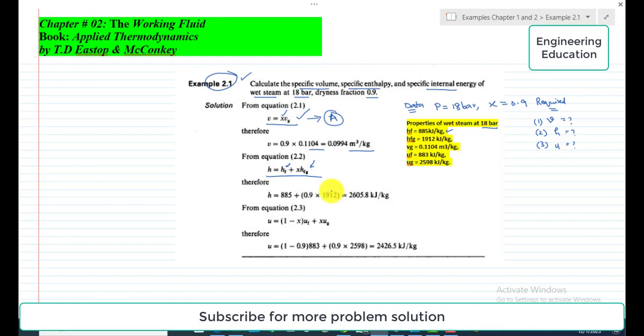Similarly, to find the specific internal energy, we have the expression: u = (1 - x)·uf + x·ug.